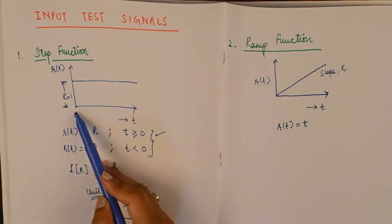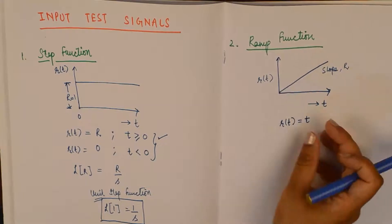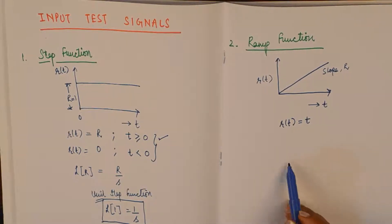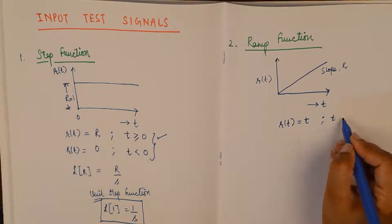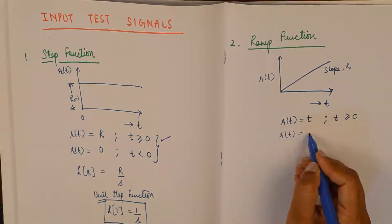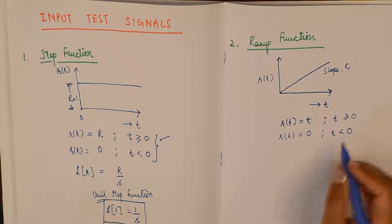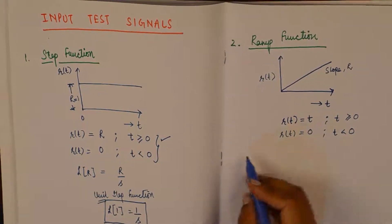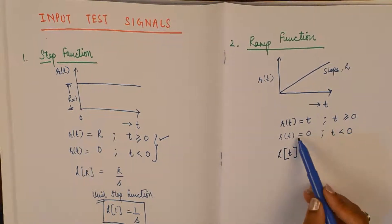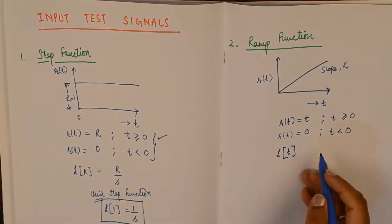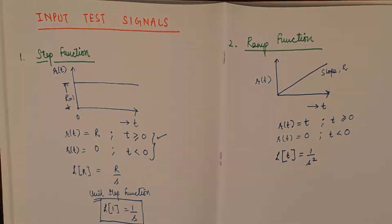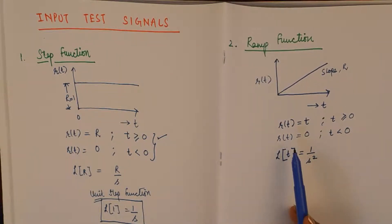The ramp function increases gradually over time, taking time to reach a value unlike the step which rises virtually instantaneously. Mathematically, r(t) equals R·t for all values of t greater than or equal to 0, and 0 for t less than 0. Taking the Laplace transform of t gives 1/s², which is the Laplace transform of the ramp function.